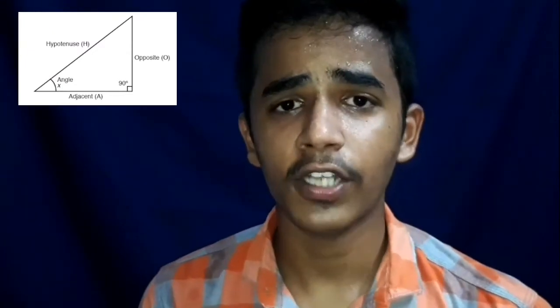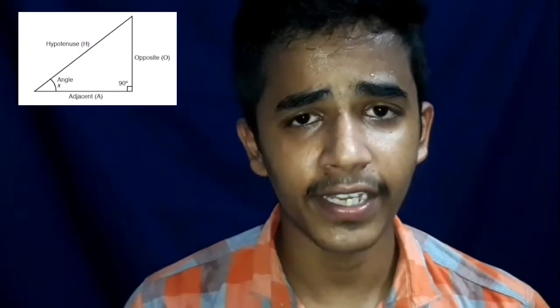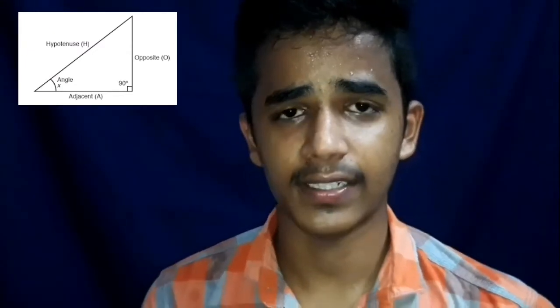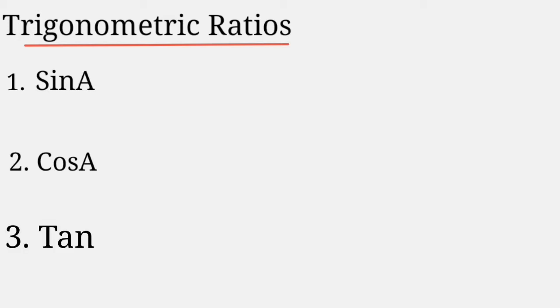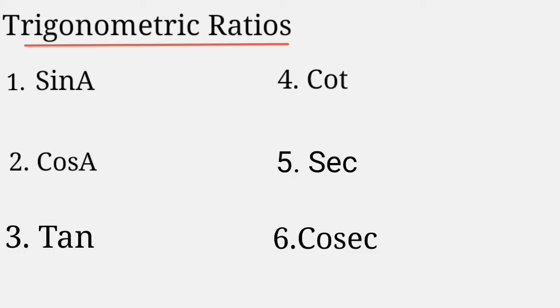We have to know the trigonometric ratios. There are six trigonometric ratios and they are: sine, cosine, tangent, cotangent, secant, and cosecant.